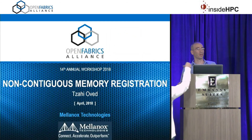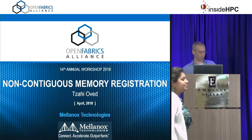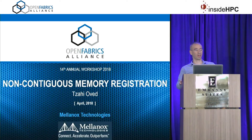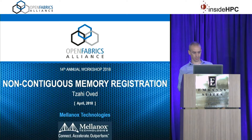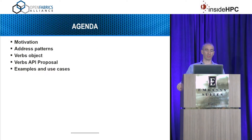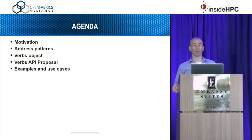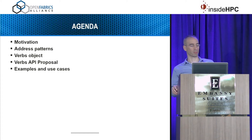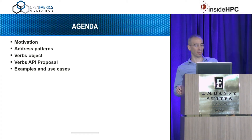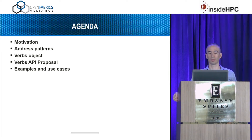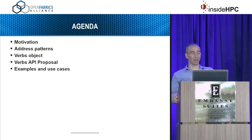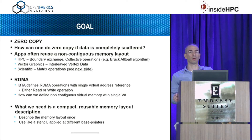Hi, I'm Zahi from Mellanox Technologies. I started presenting this topic a year ago; since then we've done work with the open source community, had discussions, and updated the proposal. I'll start by presenting the motivation, what we'd like to propose, which common address patterns we see for non-contiguous memory, then how it applies to verbs, the API proposal, and finish with some examples.